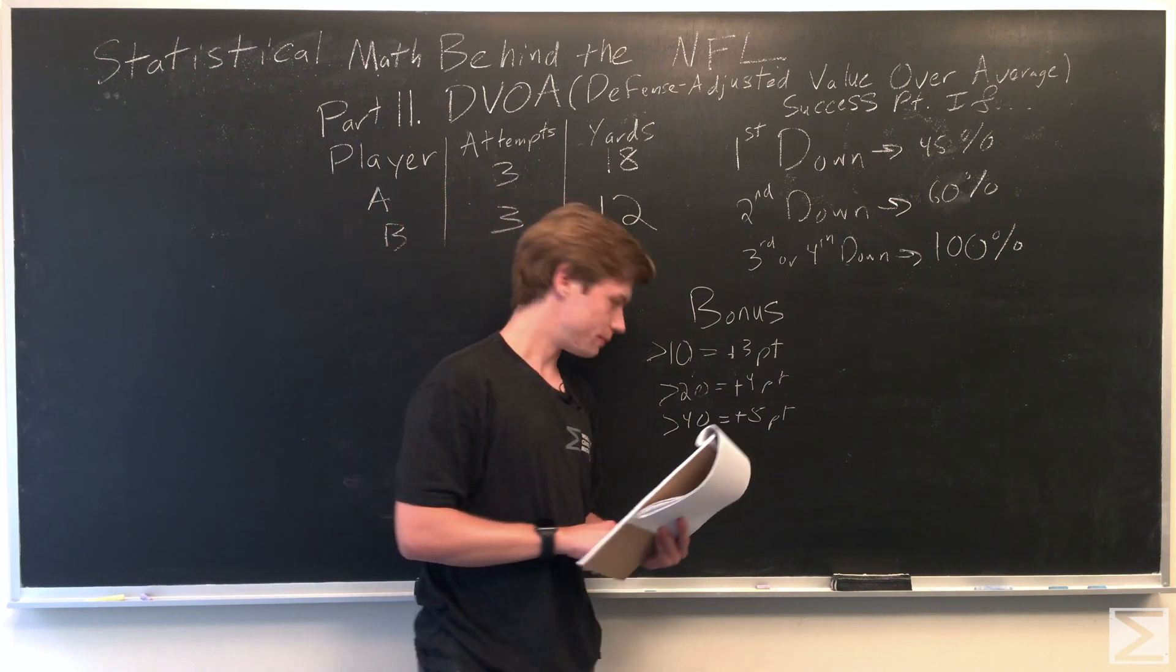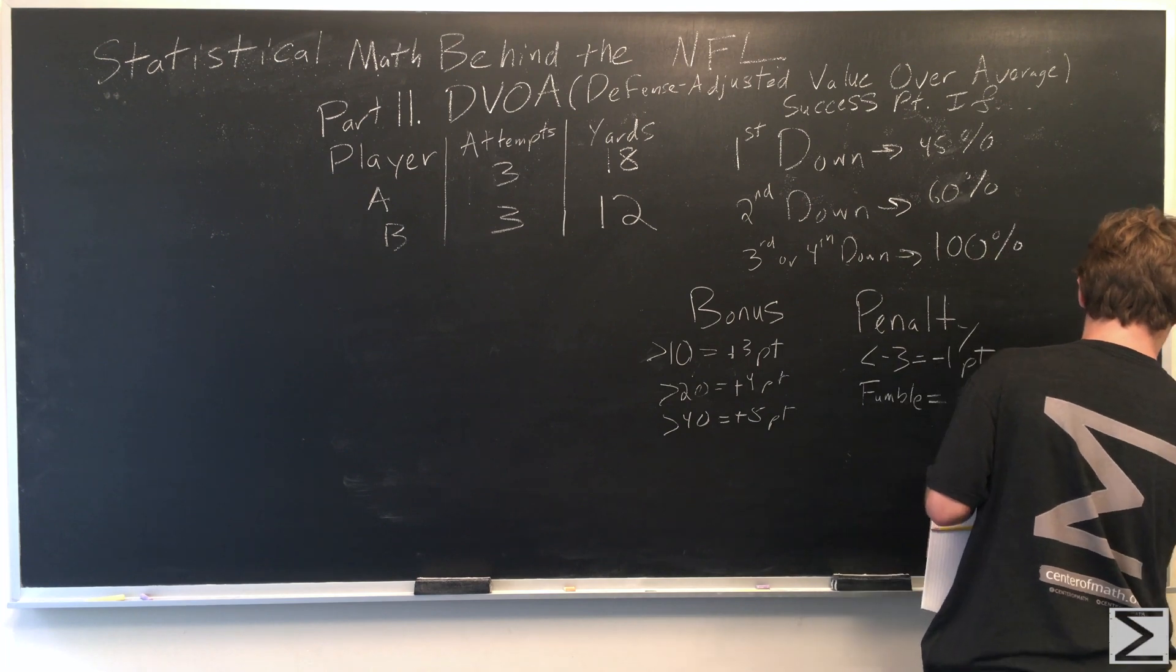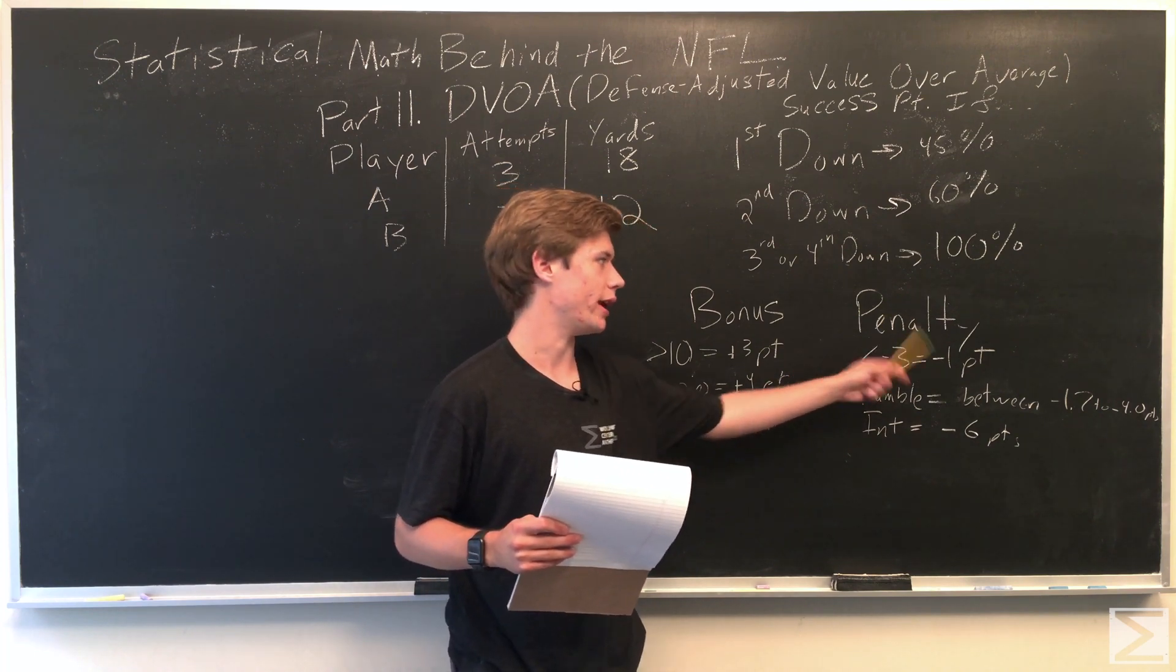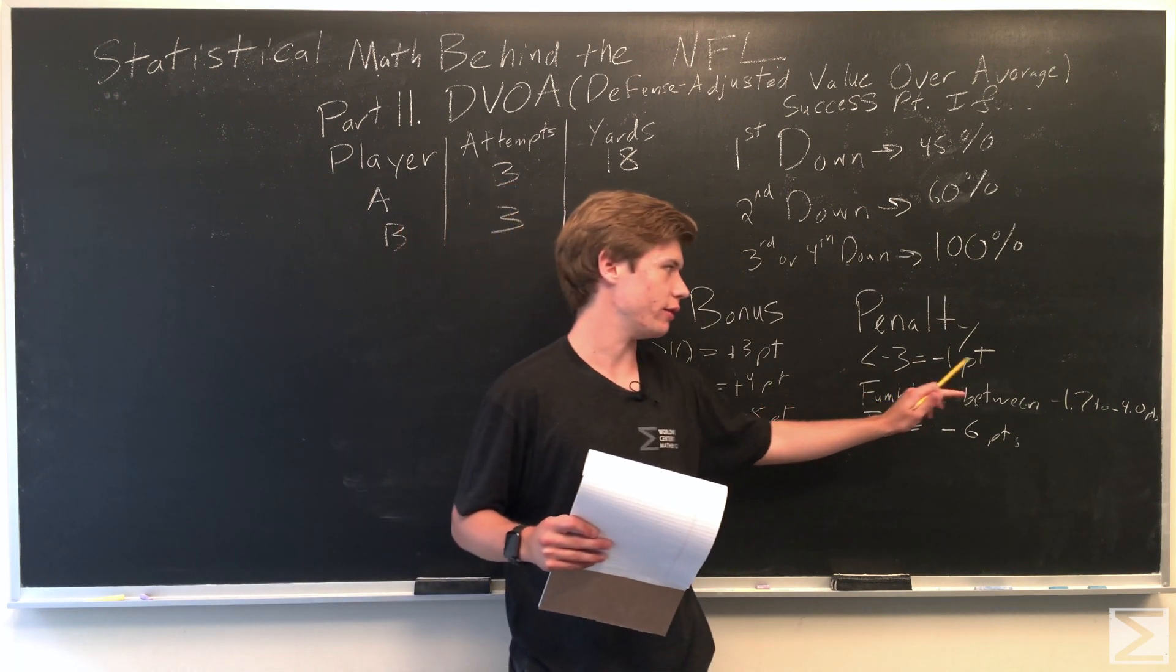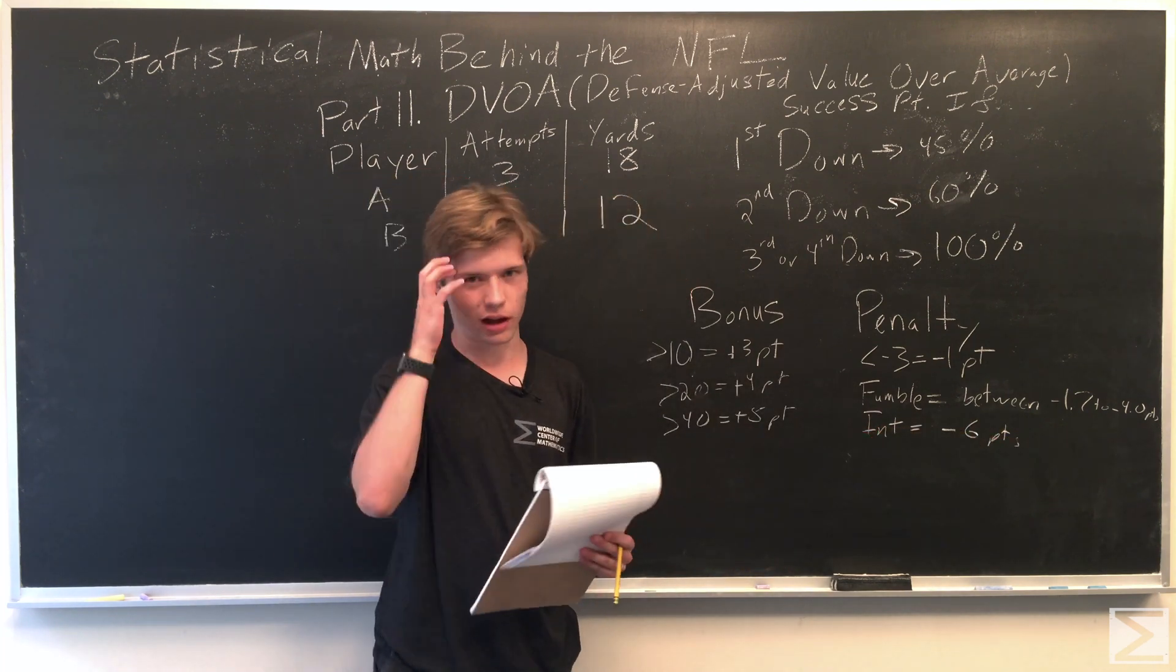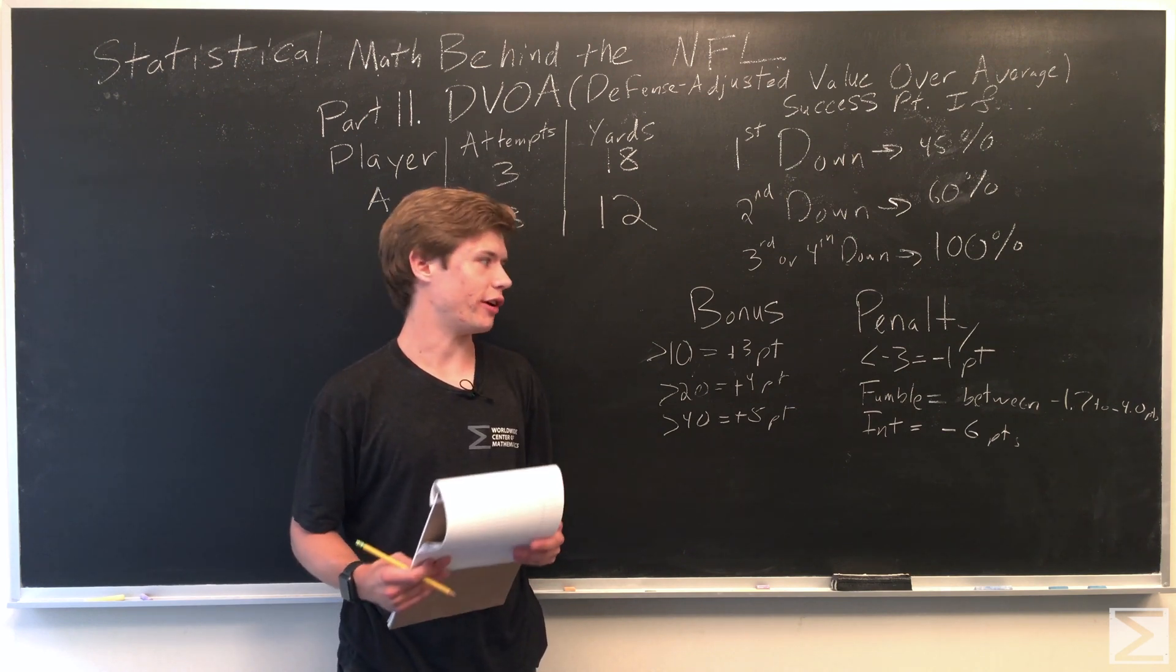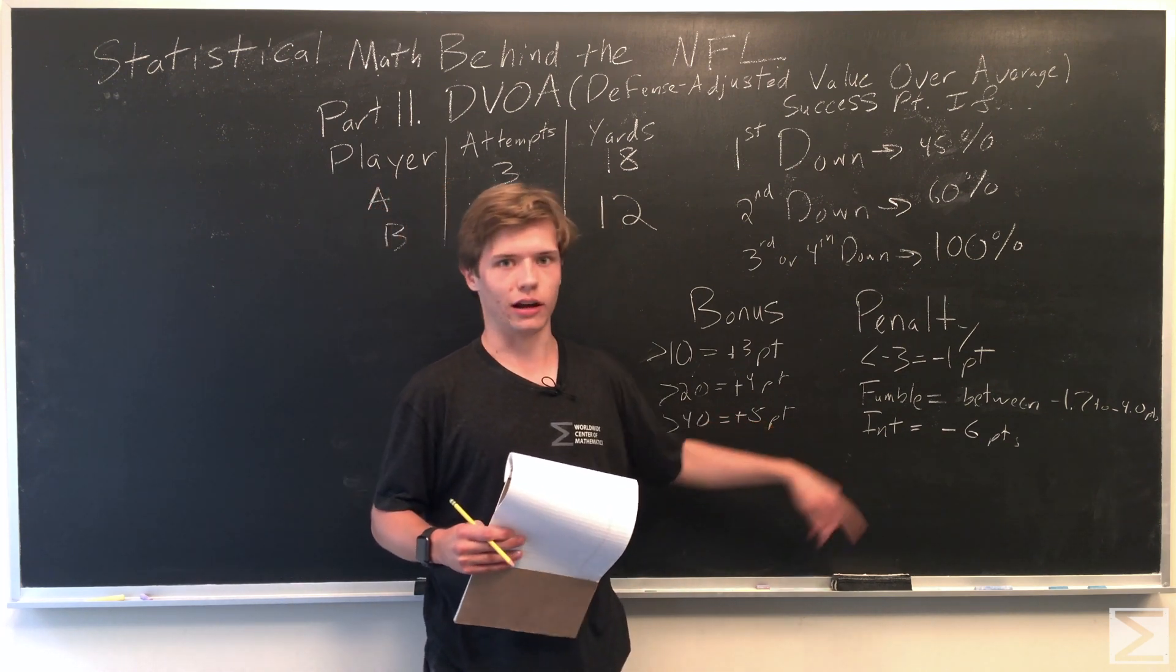And there are also penalties in the system as well. So the penalties built into the system are, if you lose three yards in a play, then you get negative one point. If you fumble, you lose anywhere between 1.7 to 4 points. So DVOA, as I've said, deals with the more situational stats and takes that into account. So in situations where it'd be worse to fumble, like when you're closer to your end zone, that would be a worse fumble than around midfield or so.